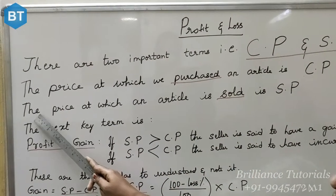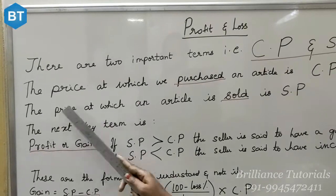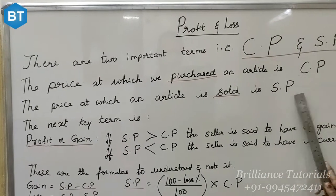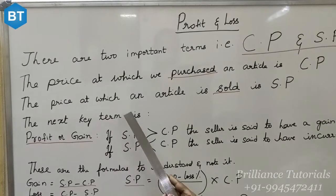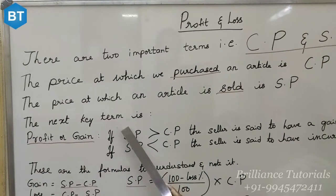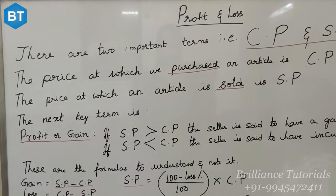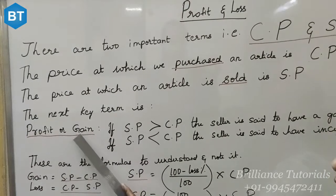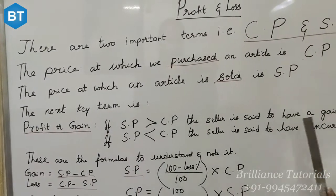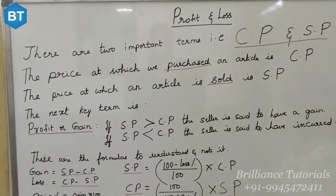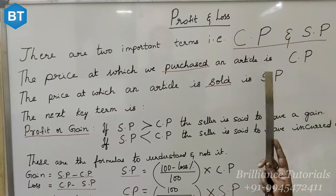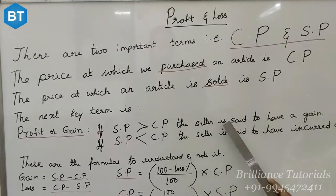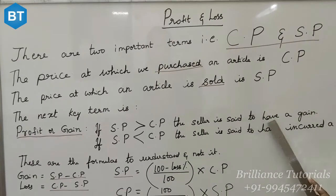On the other hand, the price at which an article is sold is called the selling price. We have to learn certain key terms to work out the formulas. The first one is profit or gain. What do you mean by profit and when can we say that there is a gain? If the selling price is greater than the cost price, the seller is said to have a gain.